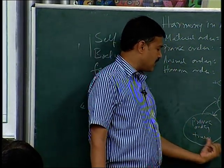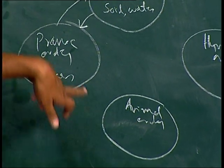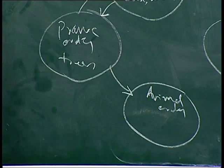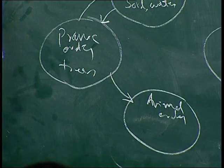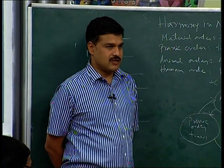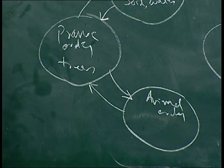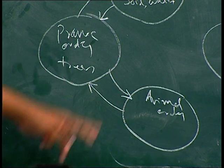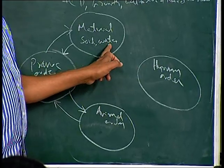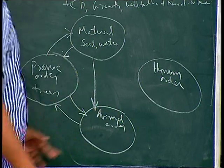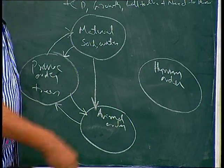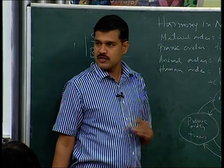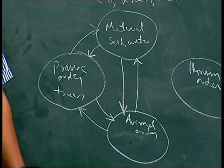Now let us take pranic order and animal order. Plants provide food to animals. And animals and birds help plants through seed dispersal. These two are also interconnected - each one enriches the other. Soil and water also benefit animals, and animals return to the soil. Without human intervention, all these things will be perfectly fine.